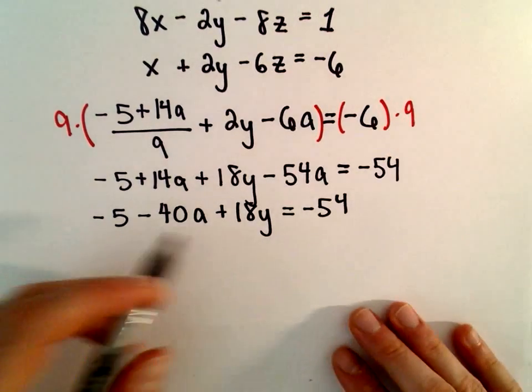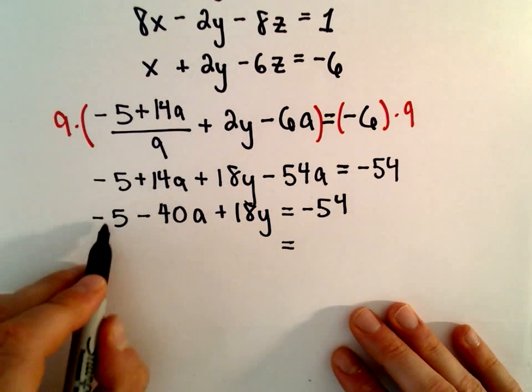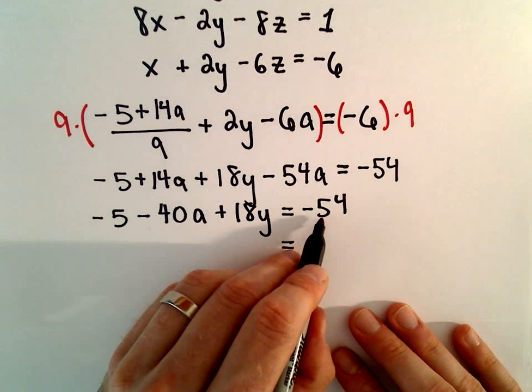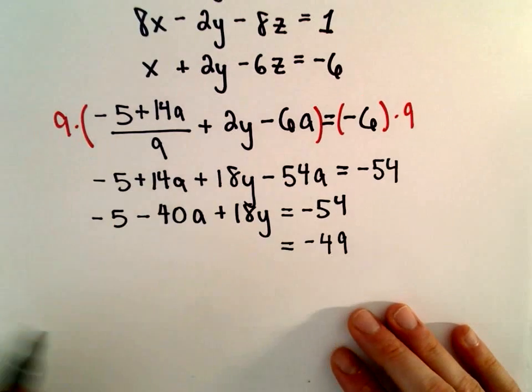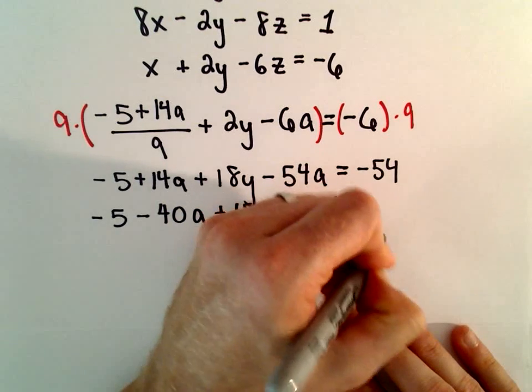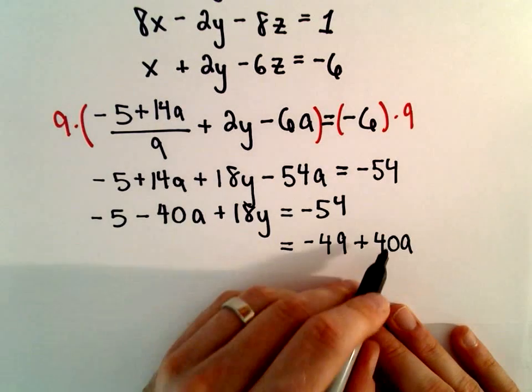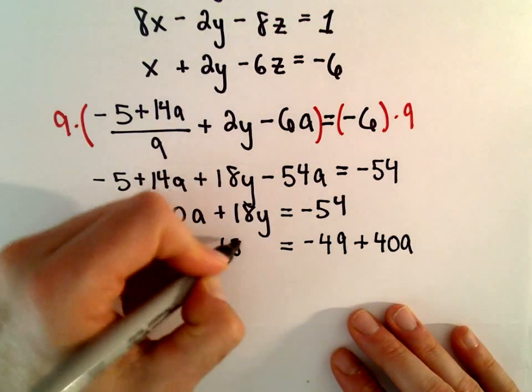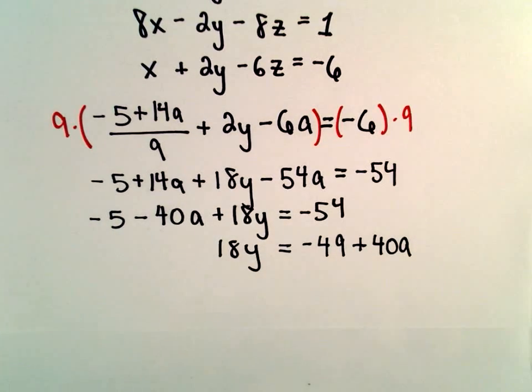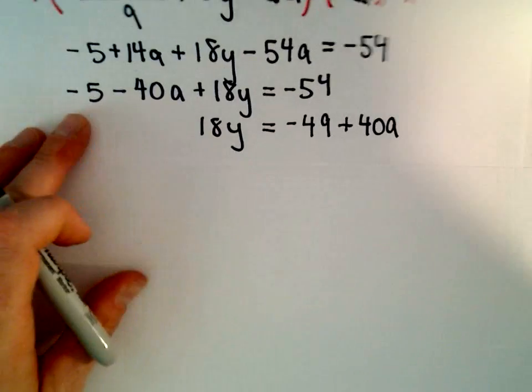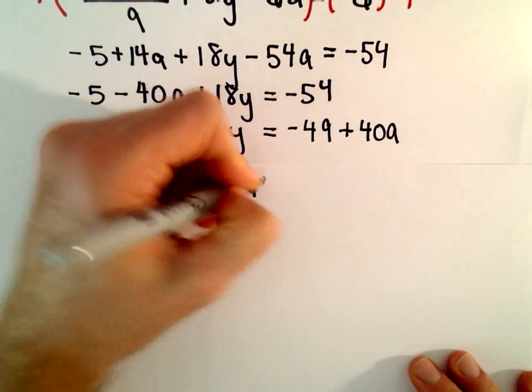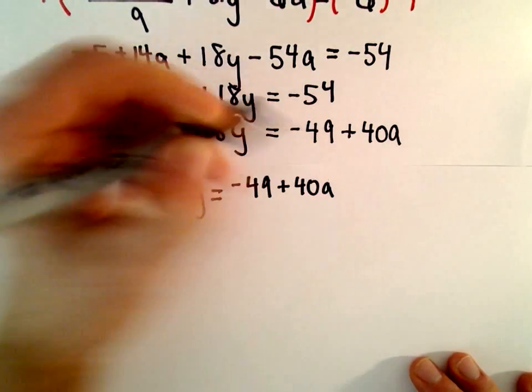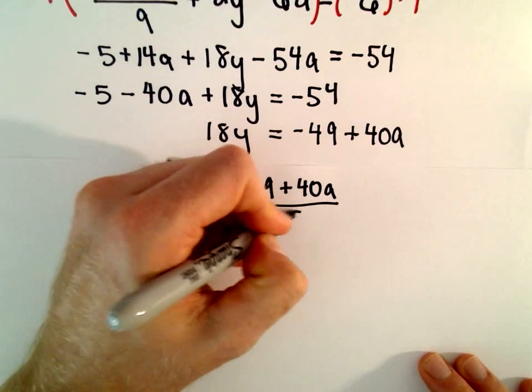Getting closer. So let's see. If we add 5 to both sides, negative 54 plus 5 will be negative 49. I'm also going to add the 40a to the right side. Then we've got 18y still left on the left side. So if we divide both sides by 18, we'll get that y equals negative 49 plus 40a divided by 18.